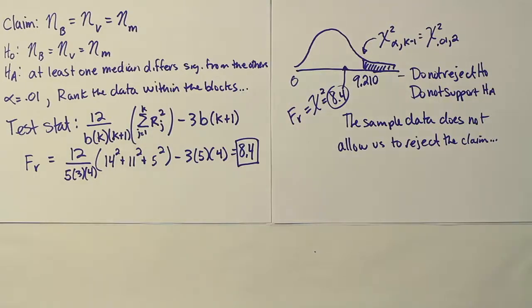Basically at this point, we have to wrap it up and say that the sample data does not allow us to reject the claim. But you might be thinking, if it was a more powerful test or a more powerful procedure like the ANOVA randomized block design procedure, then perhaps at that point we might have been able to reject the null hypothesis.